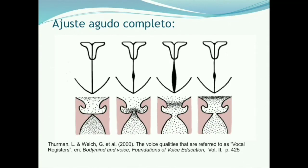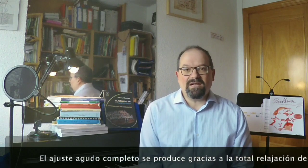Con este ajuste, los cricotiroideos pueden estirar los pliegues al máximo de su capacidad, volviéndose estos lo más finos posible, lo que produce el llamado registro agudo completo, que también se conoce en mujeres y niños como el registro de flauta o aflautado, y en el caso de los adolescentes masculinos y de los hombres que ya tienen la voz totalmente cambiada, se le conoce como falseto.